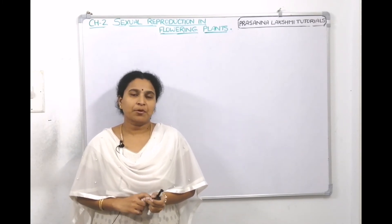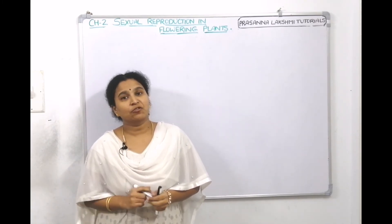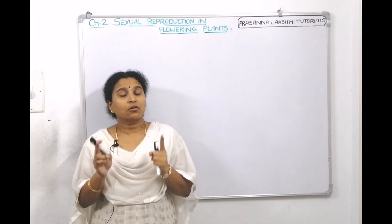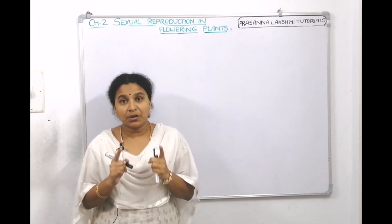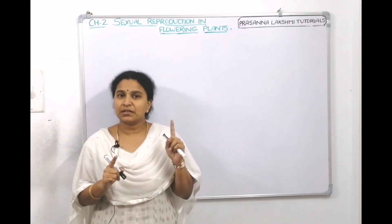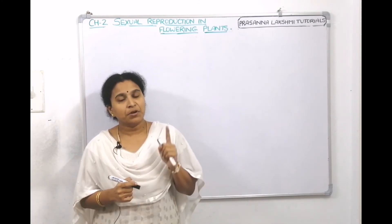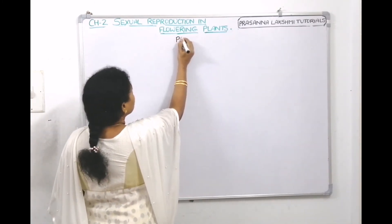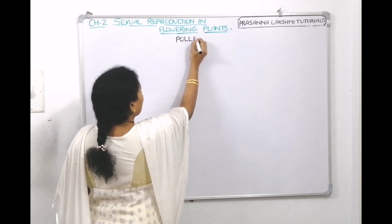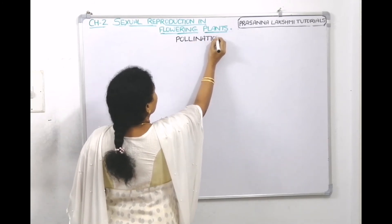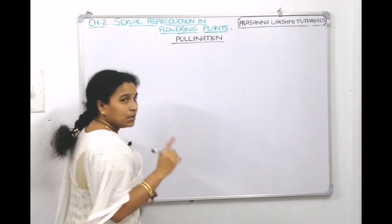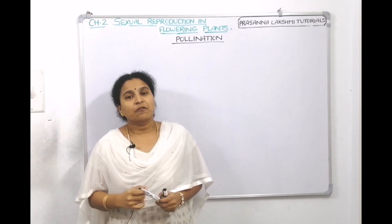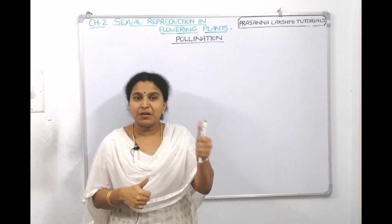In the previous lecture we discussed the development of the female gametophyte, which is called the embryo sac. The characteristic feature of angiosperms is the seven-celled, eight-nucleate embryo sac. Now the next topic we are going to discuss today is pollination. We know that a flower is the reproductive part of a plant.